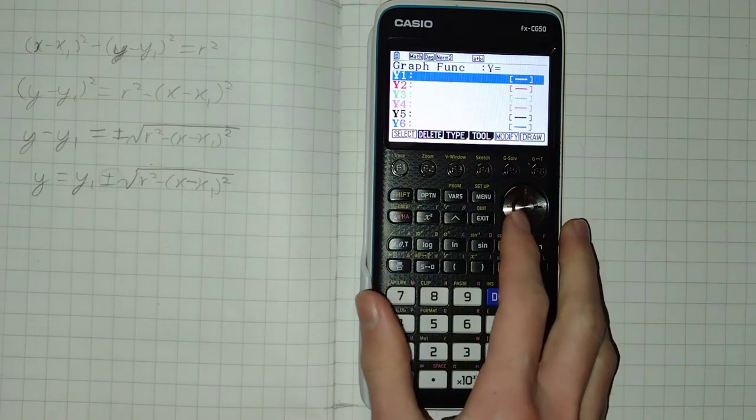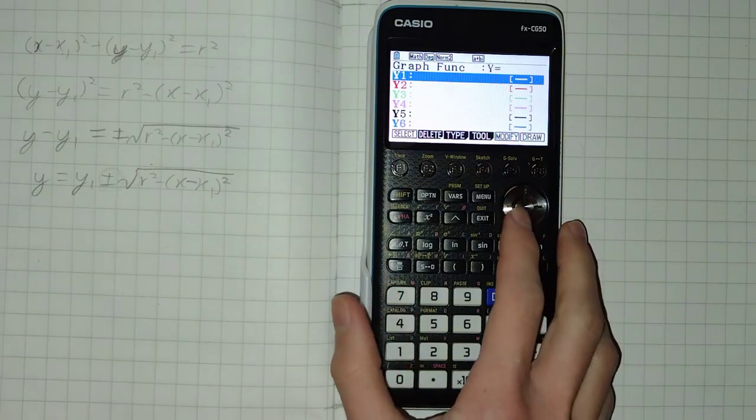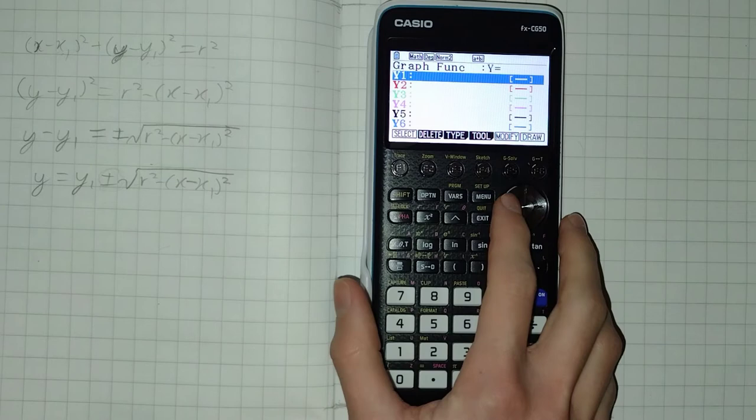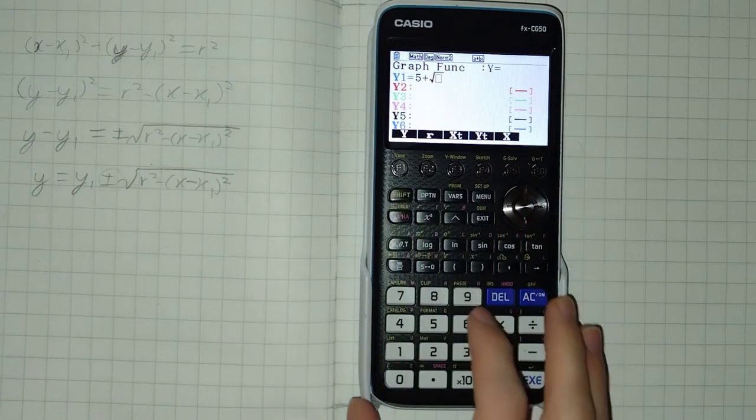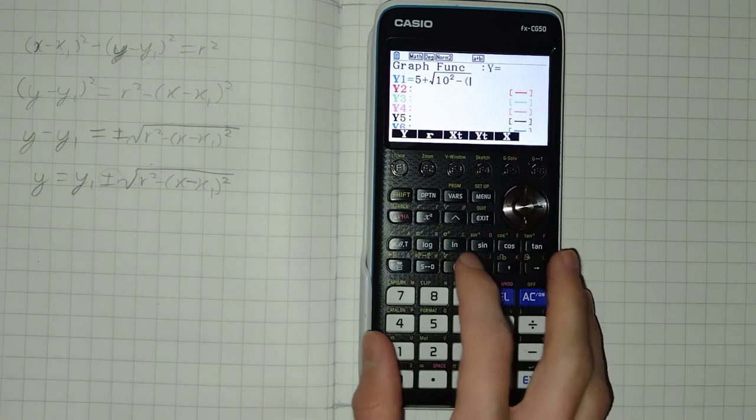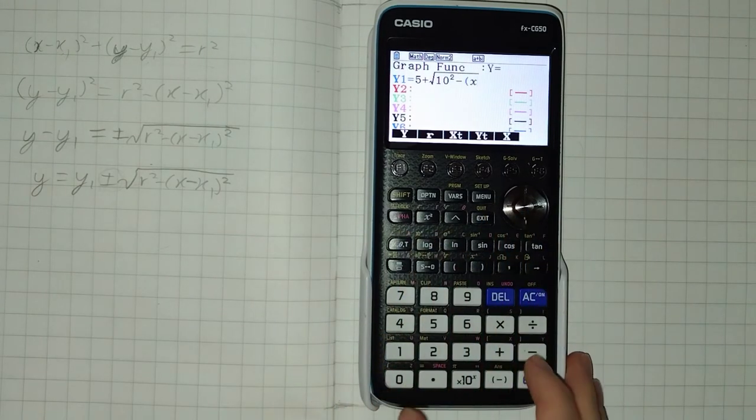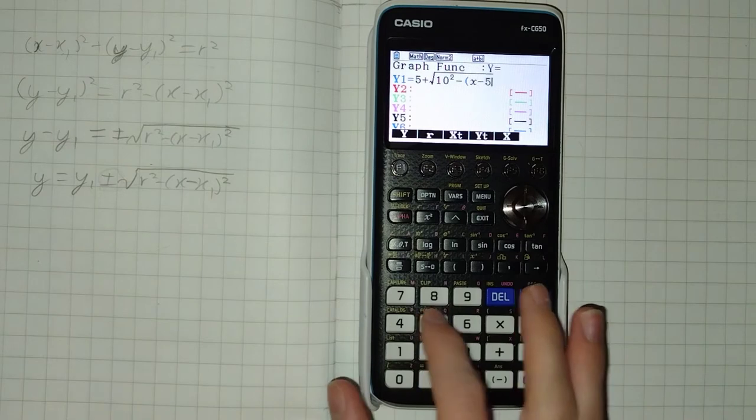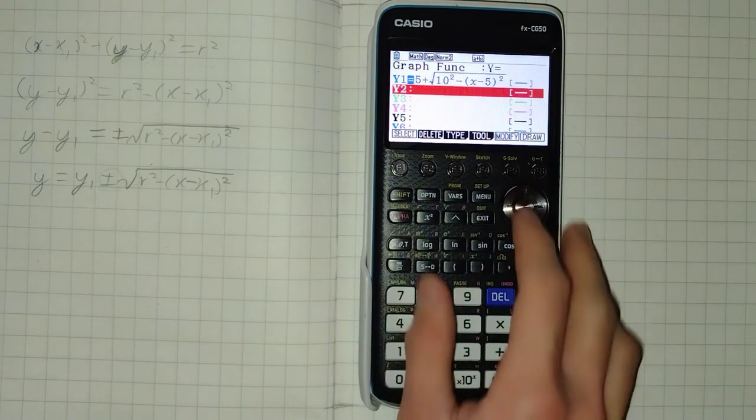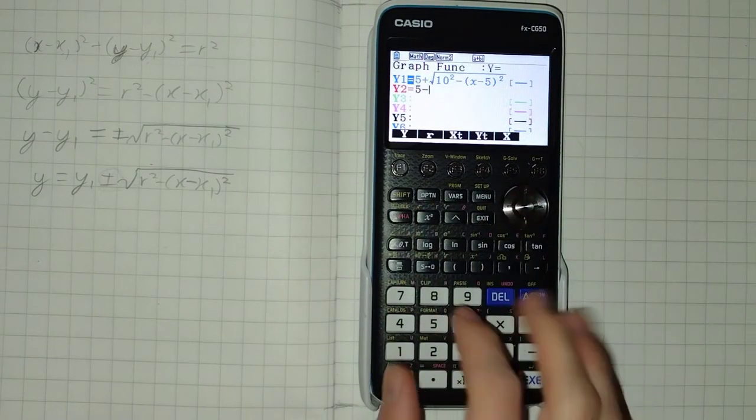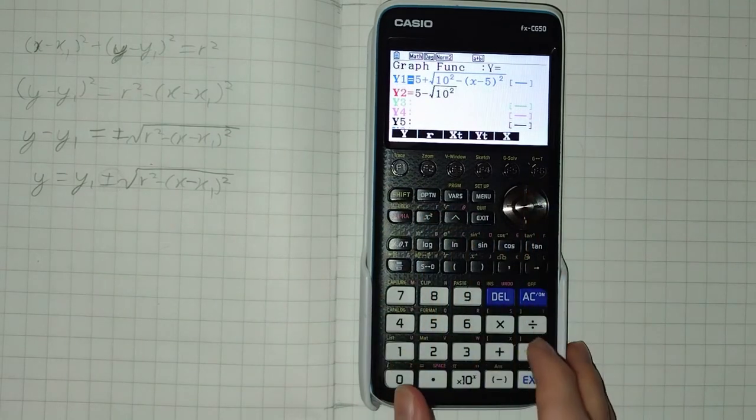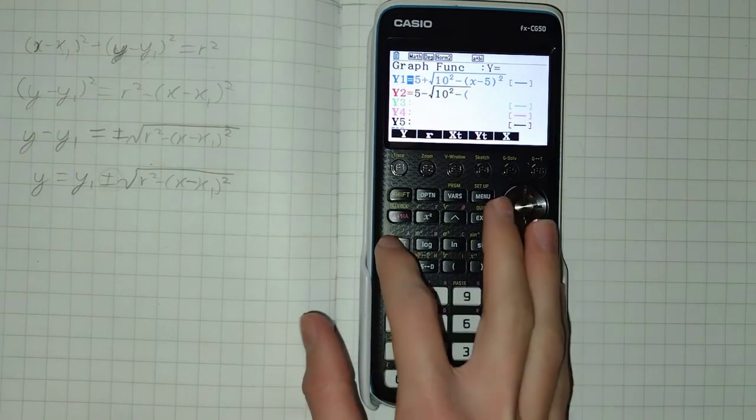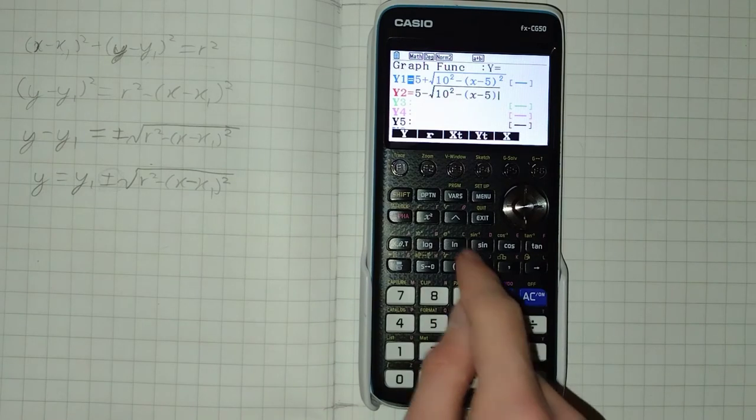And I will now demonstrate for the same example of a circle with centre 5,5 and radius 10. 5 plus the square root of 10 squared subtract x subtract 5 squared. And 5 subtract this time. 10 squared subtract x subtract 5 squared.